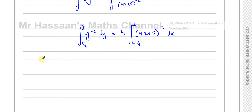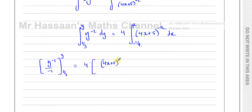Now I integrate. On the left I add 1 to the power of y⁻², giving y⁻¹, and divide by the new power, with limits y and 1/3. On the right, I add 1 to the power of (4x+5)^(−1/2), giving (4x+5)^(1/2). I divide by the new power (1/2) and also multiply the denominator by the differential of what's inside the function, which is 4. This is the reverse of the chain rule — you add 1 to the power, divide by the new power, and multiply the denominator by the inner derivative. The limits are x and −1/4.